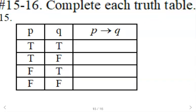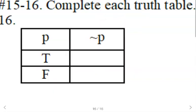Complete the truth table for an if-then statement. The only time it's false is if the first part's true and the second part's false. It's the only time it's false. Every other time it will be true. Then the negation of P, not P, so opposite truth value. If P is true, not P is false. If P is false, not P is true. Make sure you memorize those two truth tables.